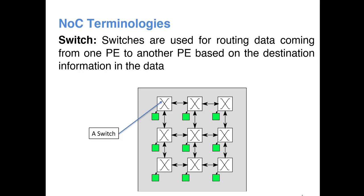Now switches, they are used for routing data coming from one PE to another PE. This is similar to our crossbar switch when we discuss the FPGA fabric. Basically it takes data from one or two ingress ports or input ports and sends it to other egress ports or output ports, or they may send it to the PE.